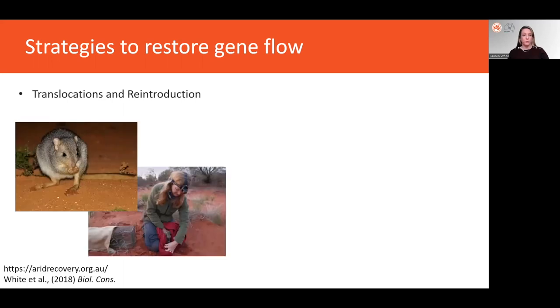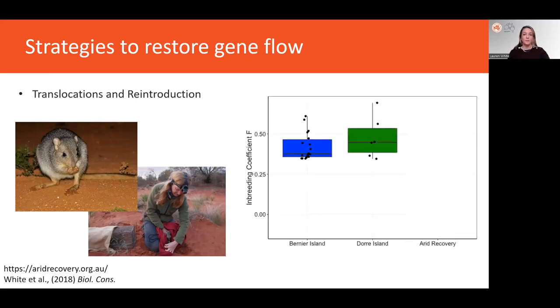For example, the burrowing bettong or booty was reintroduced to a fenced reserve at Arid Recovery in South Australia in the late 90s. The source populations for this reintroduction were two isolated populations off the Western Australian coast. The source populations were quite inbred. By mixing individuals from these two different groups though, the descendant Arid Recovery population has much lower inbreeding and higher diversity than either of the two source populations. So gene flow has been restored between the two island populations at Arid Recovery, where booties continue to thrive.